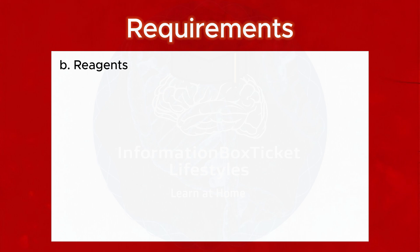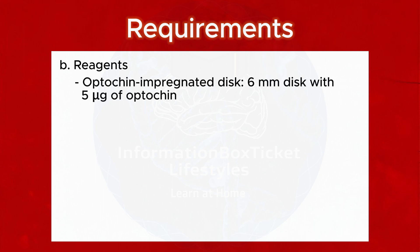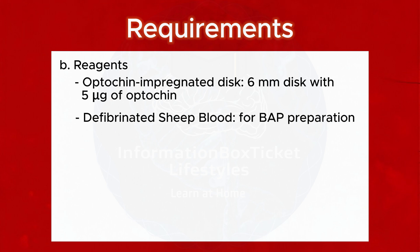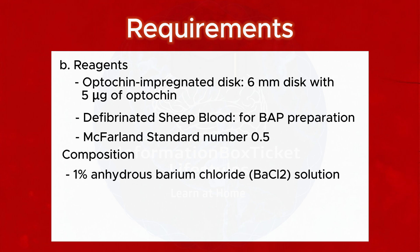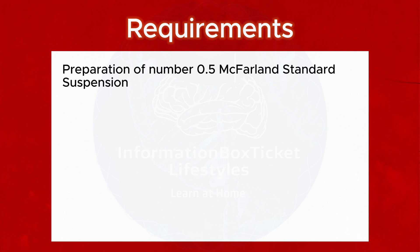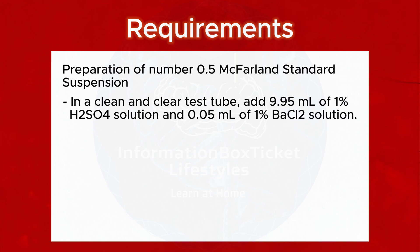Reagents: Optochin-impregnated disc — 6 mm disc with 5 mcg of Optochin; defibrinated sheep blood for BAP preparation; McFarland standard No. 0.5 — composition: 1% anhydrous barium chloride (BaCl₂) solution and 1% sulfuric acid (H₂SO₄) solution. Preparation of 0.5 McFarland standard suspension: in a clean and clear test tube, add 9.95 mL of 1% H₂SO₄ solution and 0.05 mL of 1% BaCl₂ solution.